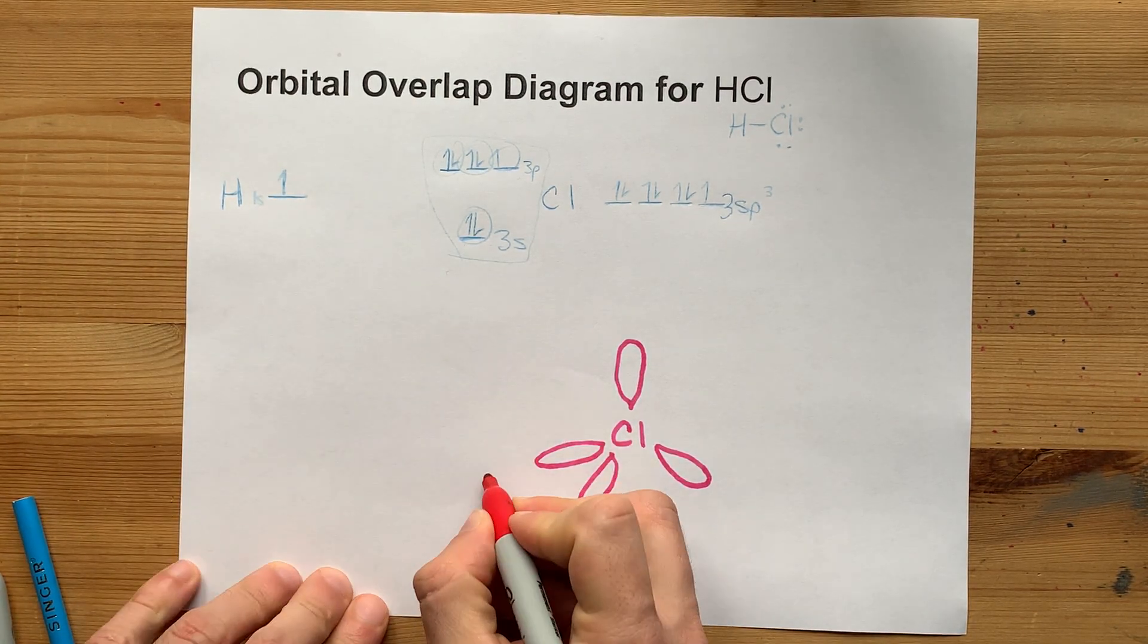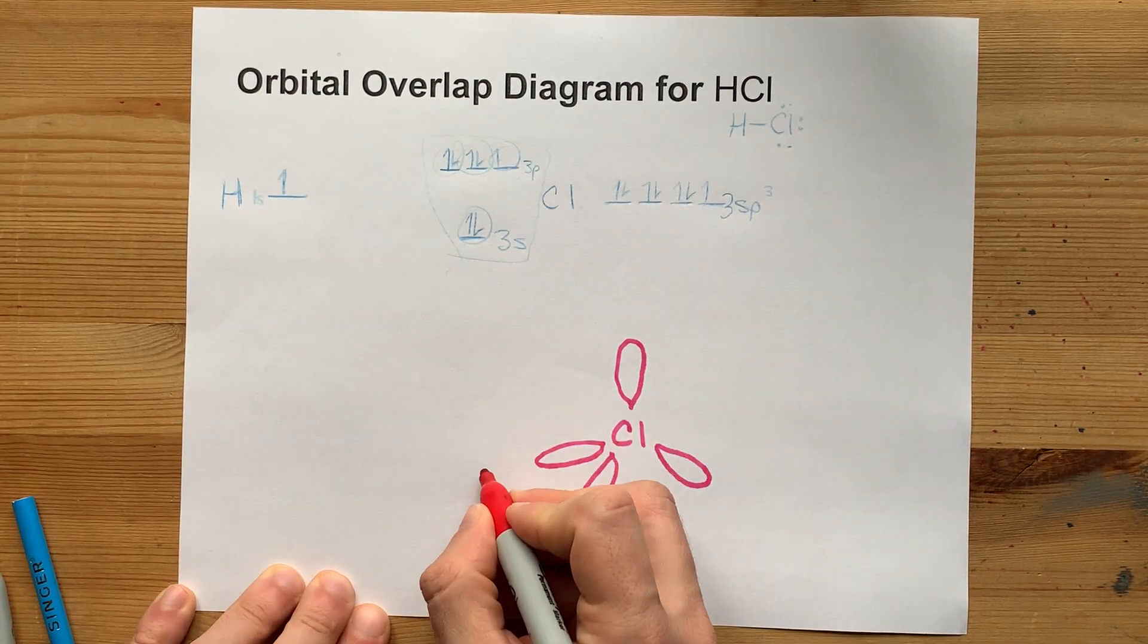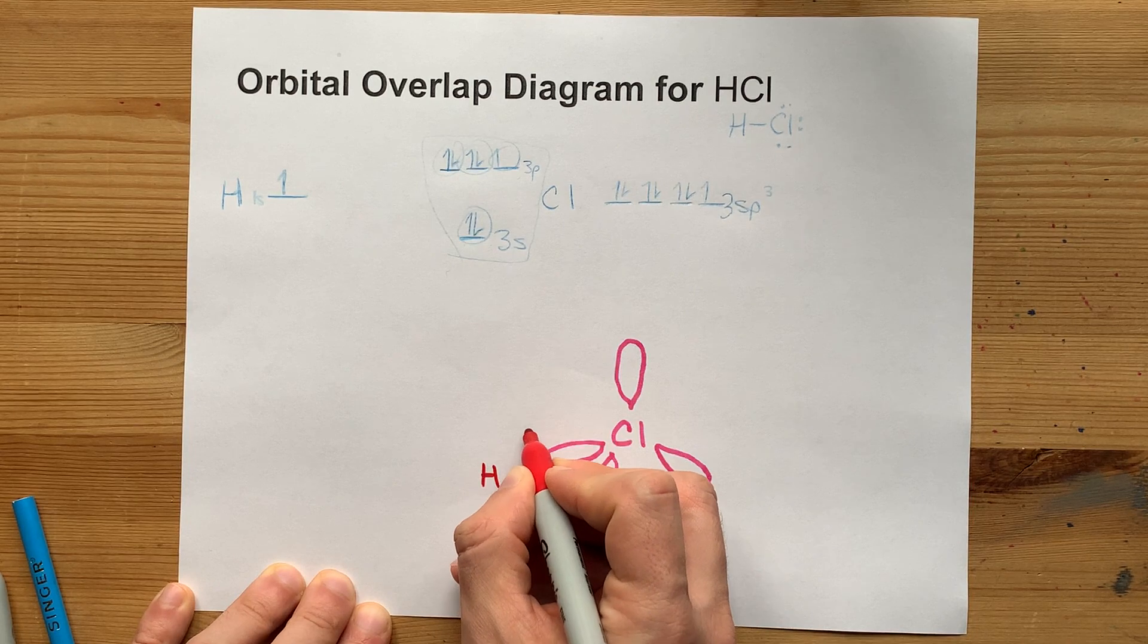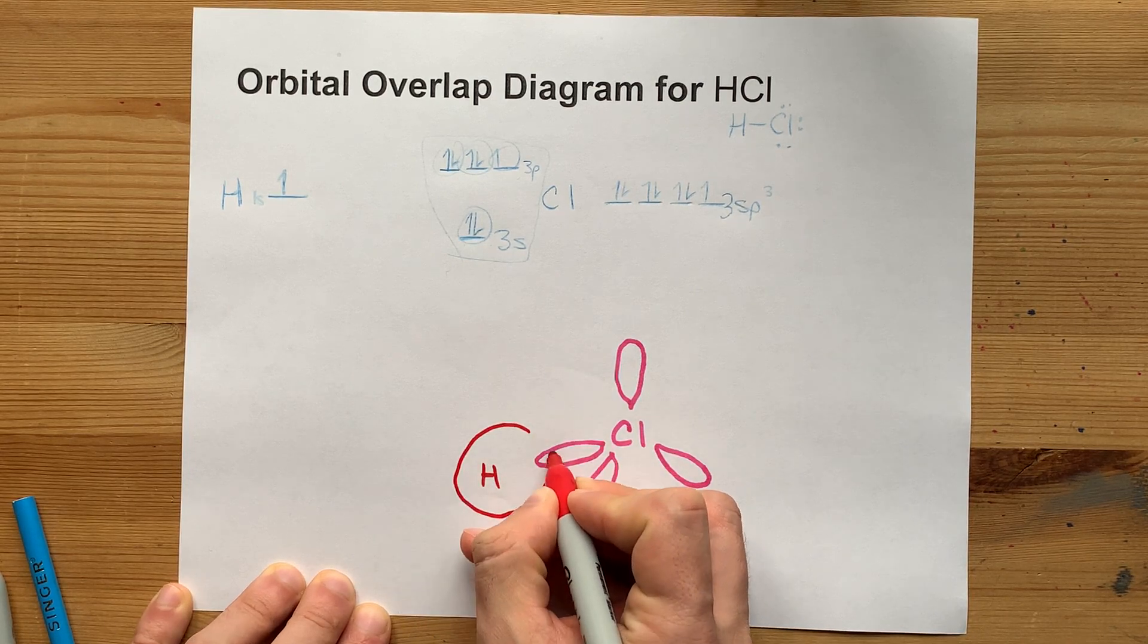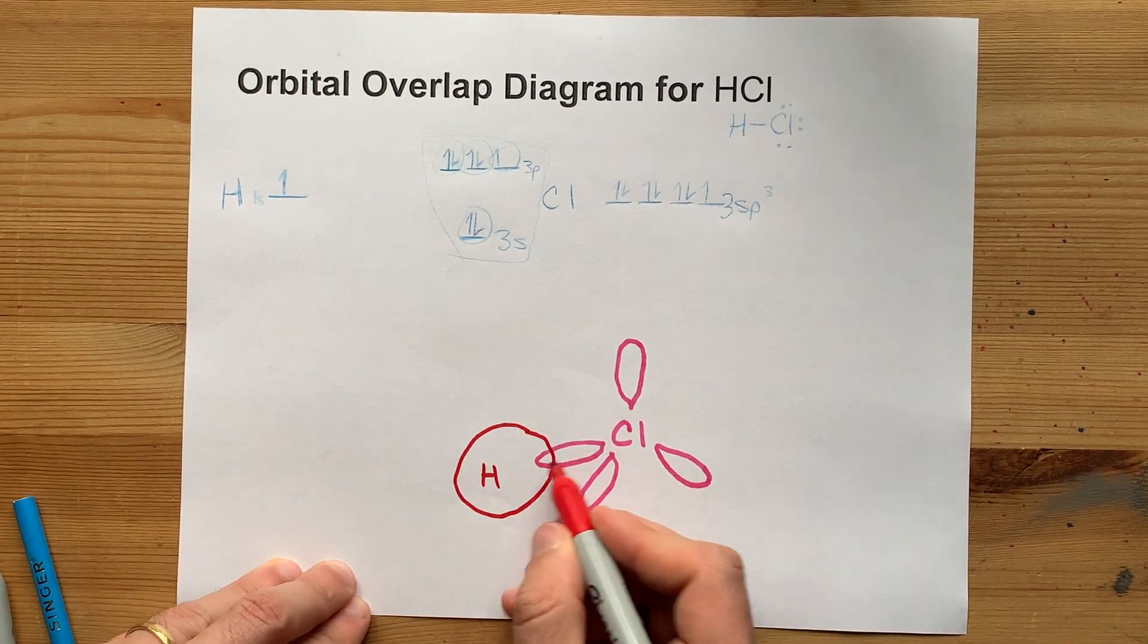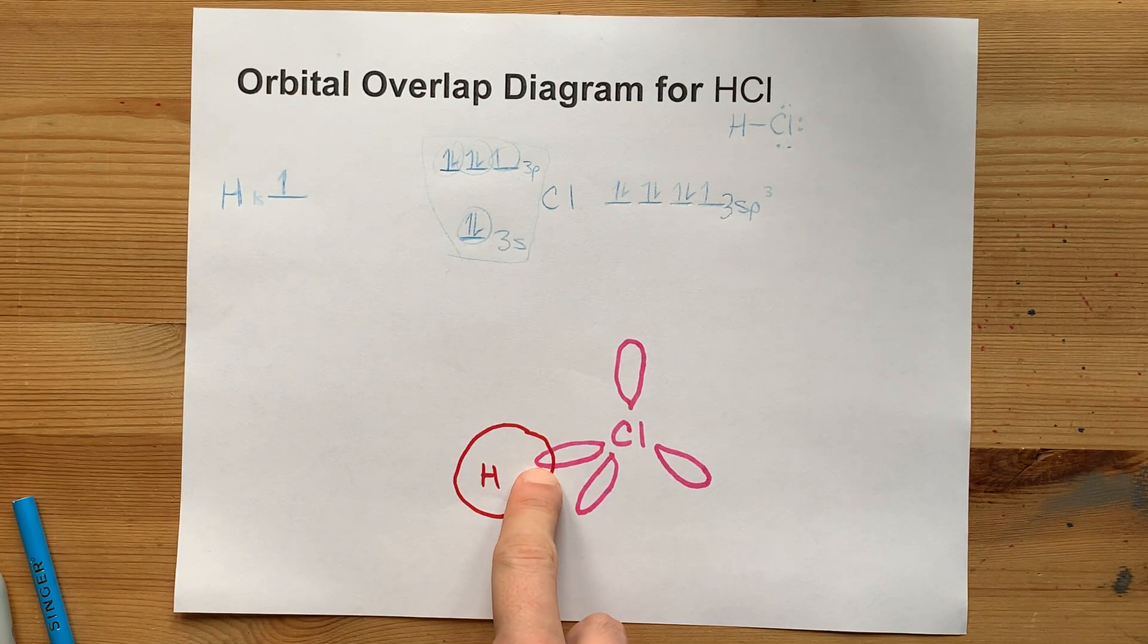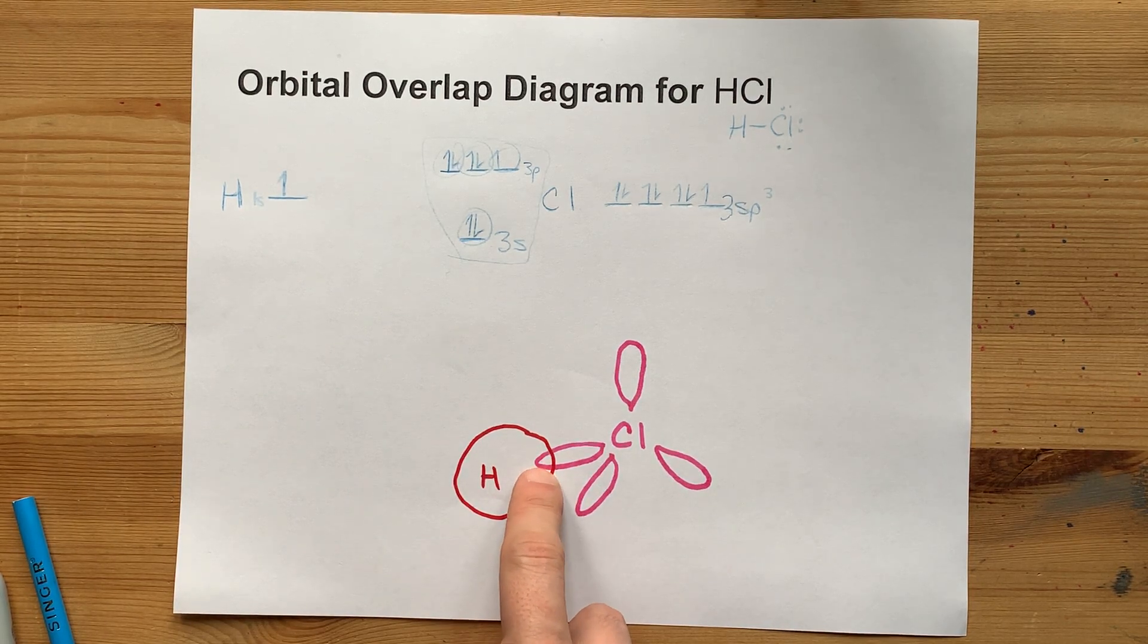The hydrogen is literally just a 1s. So, you can put your H. A 1s orbital is a single sphere. I'm just going to make sure that they overlap with one of the hybridized orbitals from the chlorine. This represents the single bond between them.